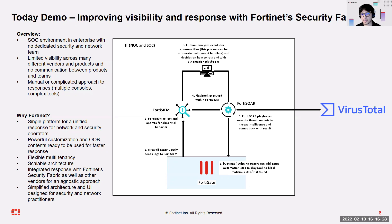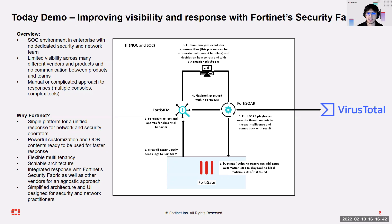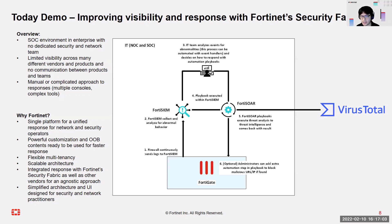FortiSOAR then executes threat analysis — going to threat intelligence sources like VirusTotal or FortiGuard — and returns results to determine if something is malicious. For example, is a URL that a user behind FortiGate is communicating with malicious or not? If VirusTotal comes back with a malicious result, the administrator can add an automation step within their playbooks to block the malicious URL and IP on FortiGate, or take some other additional step.